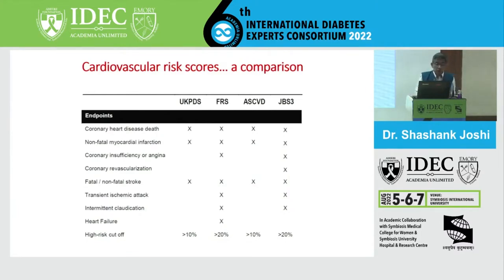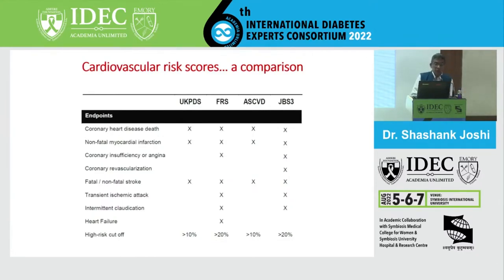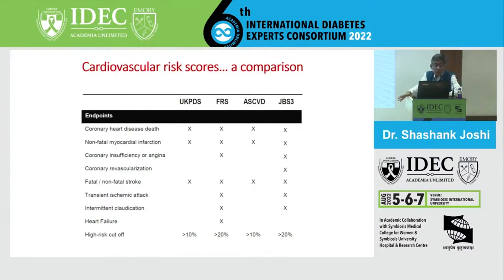Our SGLT trials focused predominantly on heart failure as an elephant in the room, with some non-fatal MI and angina. If you look at the old Proactive trial with pioglitazone data, they had data even on stroke - which was later removed. The cardiovascular endpoints kept on changing, and so did the scores.